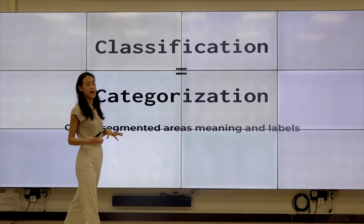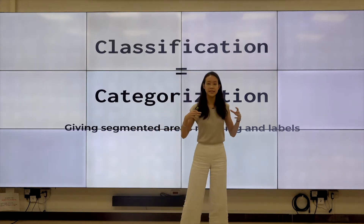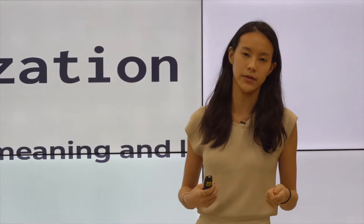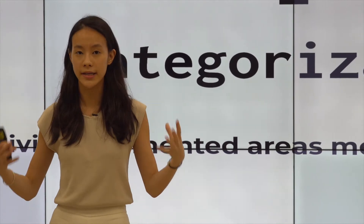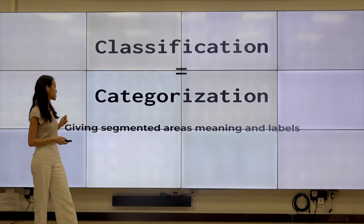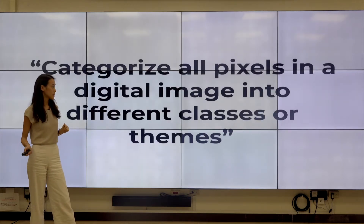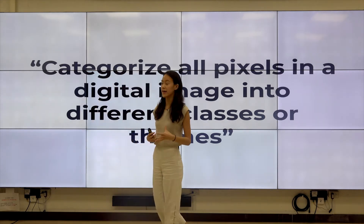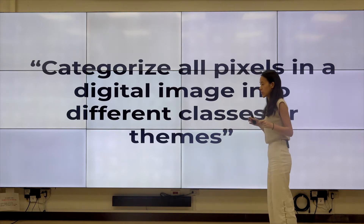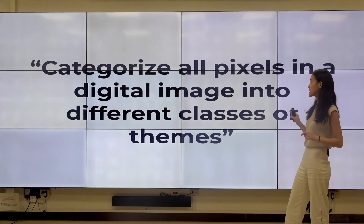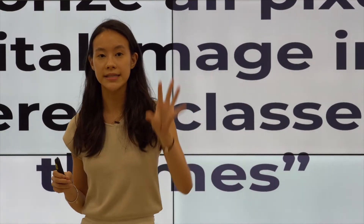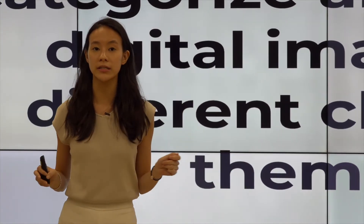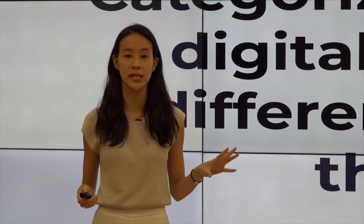I usually see classification as categorization — it's basically the same thing. What it does is give segmented areas or segmented parts meaning. Please keep recalling this to yourself: classification is giving segmented areas meanings and labels. In more technical terms, specifically for scans, classification is a means to organize all of the pixels in a digital image into different classes or themes, assigning each pixel to a certain label or class.